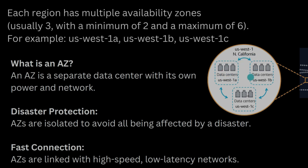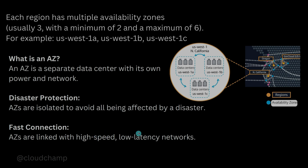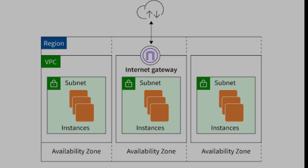AZs are separated from each other for disaster protection and are isolated to avoid all being affected by a single disaster. However, they are still connected with AWS's own high-speed, low-latency internal networks, so data can be transferred between AZs very quickly. We select an AZ when deploying instances or databases by choosing a subnet — one subnet equals one AZ.